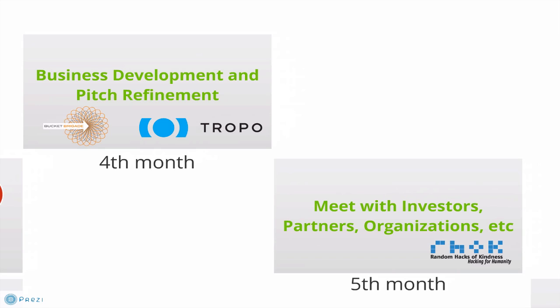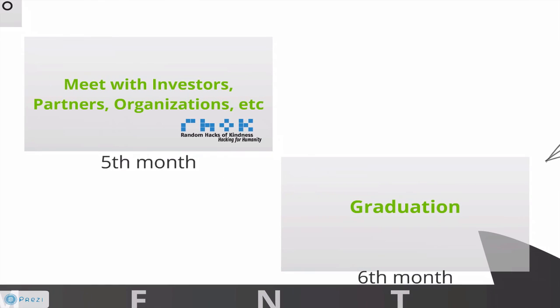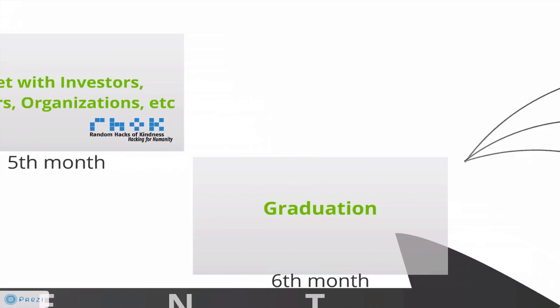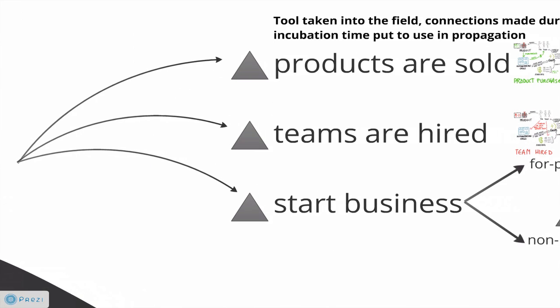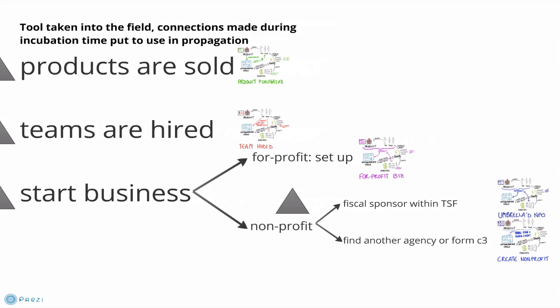Hopefully we'll be able to support them in continuing their efforts. Finally, in the sixth month, we'll put them in touch with these people, and they'll graduate in a number of different ways. They can sell their product, get hired as a team, or they can form their own business — either for-profit or non-profit.